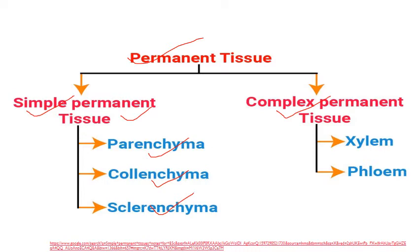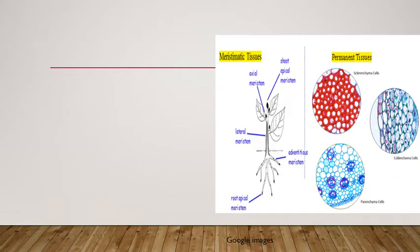Complex permanent tissue means the tissues are made up of more than one type of cells. Under this we have xylem and phloem.